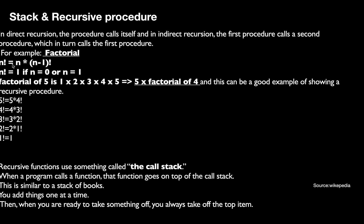Finding factorial of 5: 5! = 1×2×3×4×5 = 120. Using the recursive procedure, 5! = 5 × 4!. Then 4! = 4 × 3!, which is stored in the stack. Then 3! = 3 × 2!, also stored in the stack. Then 2! = 2 × 1!. Each intermediate result is pushed onto the stack as we recurse deeper.